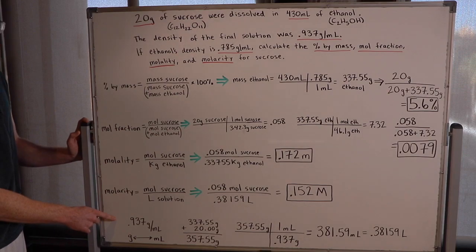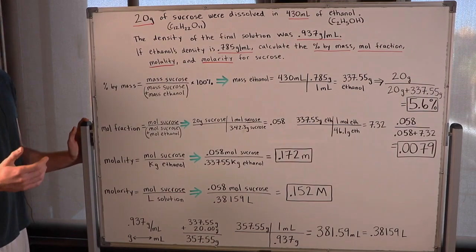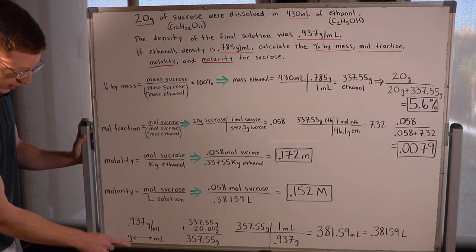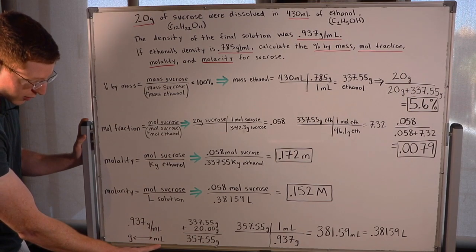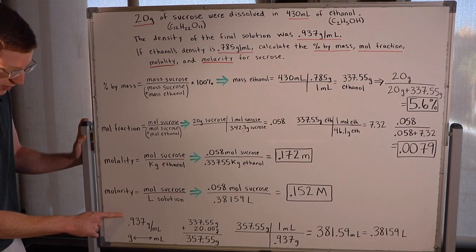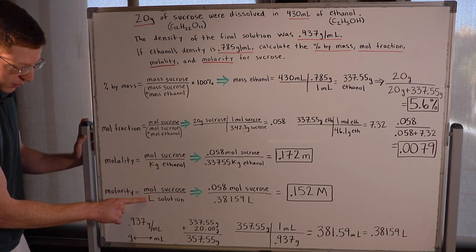So I was given some information about the final total solution. The density of it was 0.937 grams per milliliter. And you can think about density as sort of a way to convert between mass and volume. If you have volume, you can go to mass. If you have mass, you can go to volume, as long as you have the density.